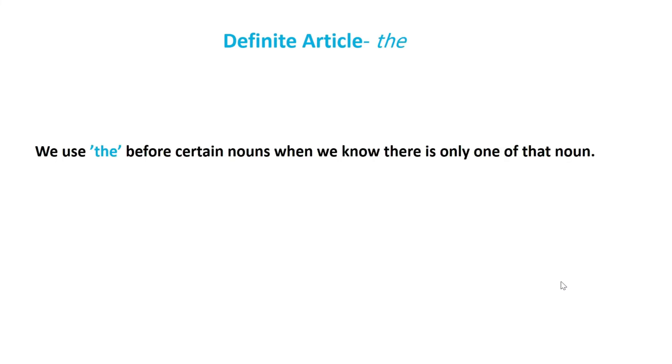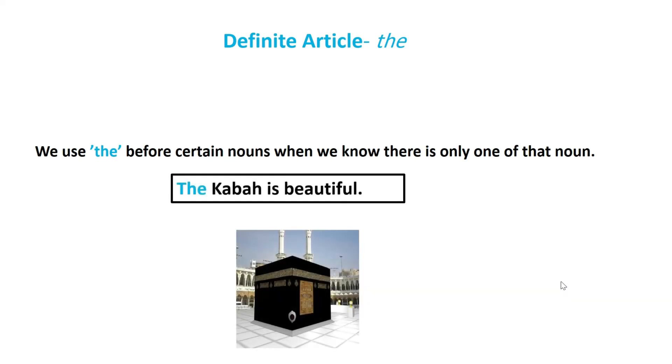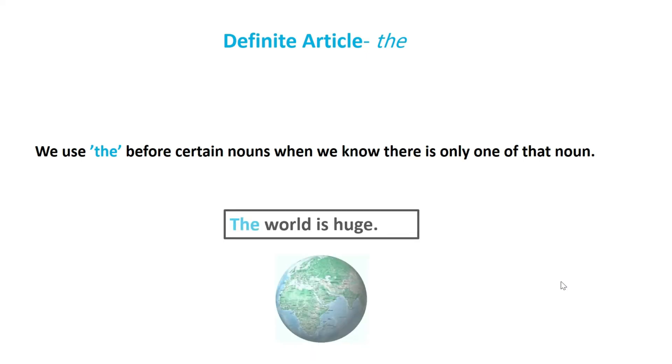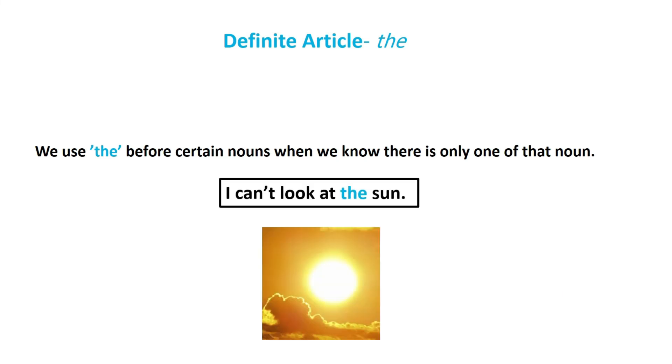The definite article 'the' is used before certain nouns when we know there is only one of that noun. For example, 'The Kaaba is beautiful' - there's only one Kaaba. 'The world is huge.' 'I can't look at the sun' - there's only one sun, so we use 'the.'